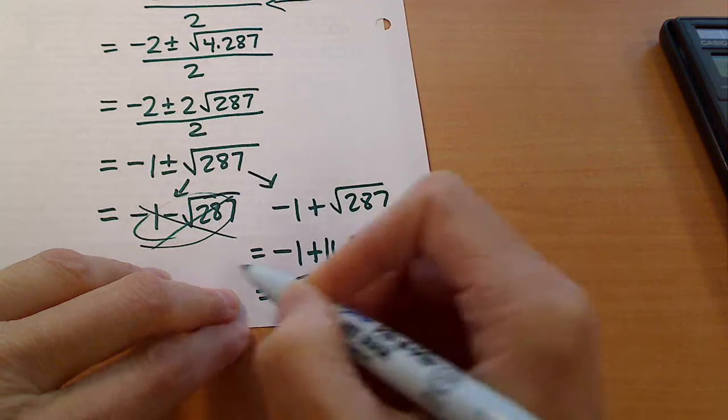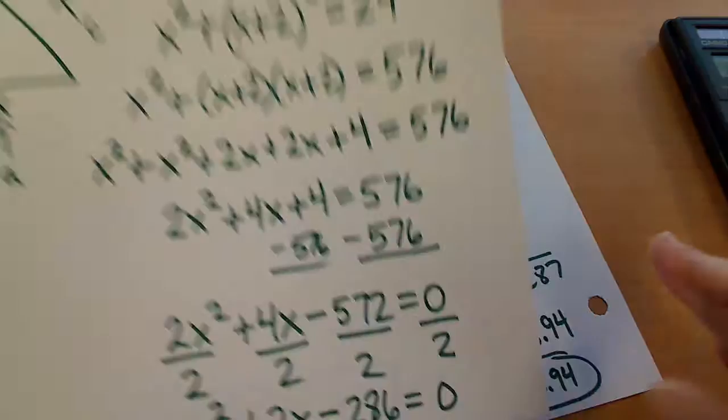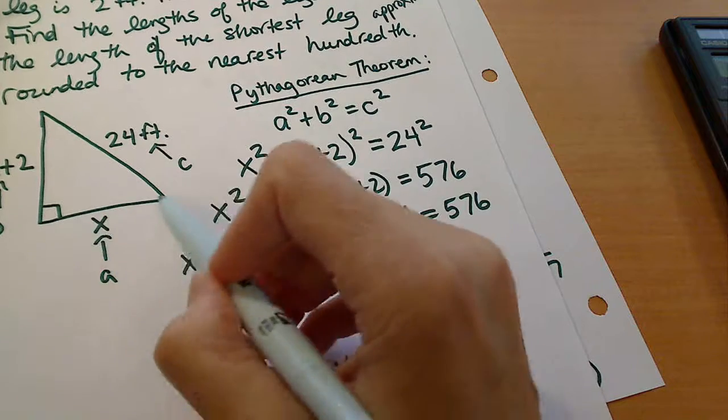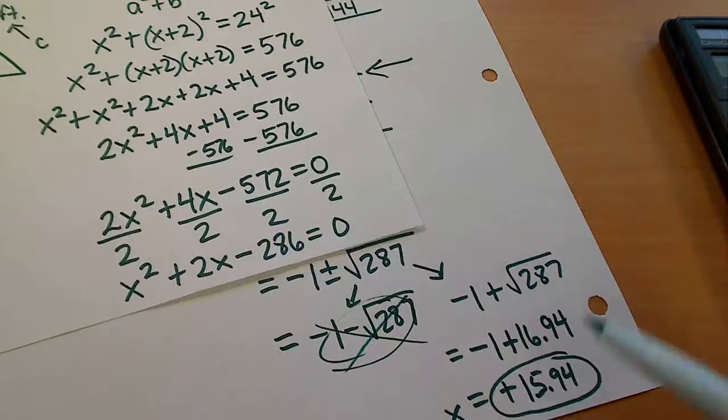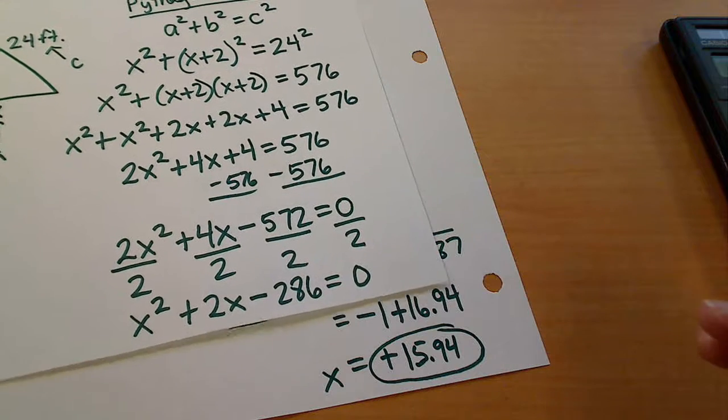So this would actually be, since this is what x is equal to and x is the shortest length, the shortest side here, then that's actually the answer that they're asking for in this problem. And that would be it in this problem.